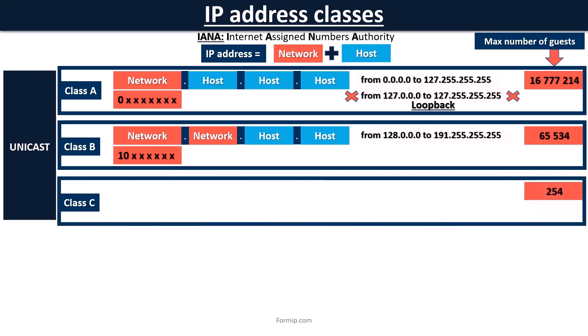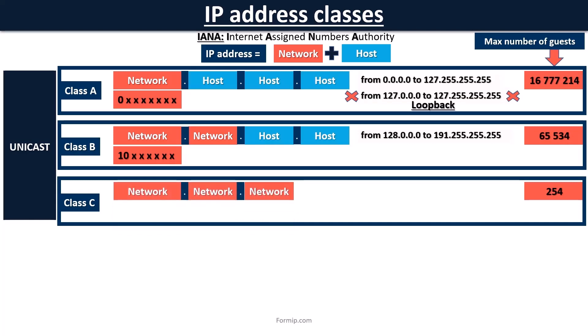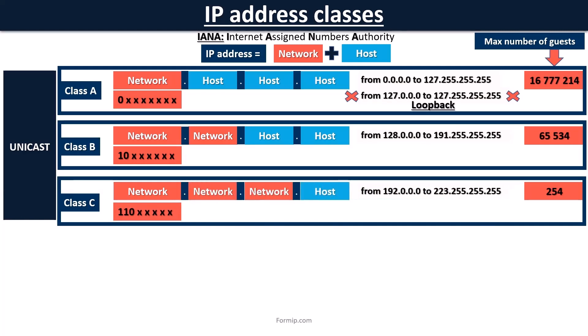Class C is the most widely used address class, as it is intended for small networks with a maximum of 254 hosts per network. The first three bytes of the IP address identify the network part and the remaining byte is reserved for the host part. A class C address always starts with a binary of 110, giving us networks ranging from 192 to 223.